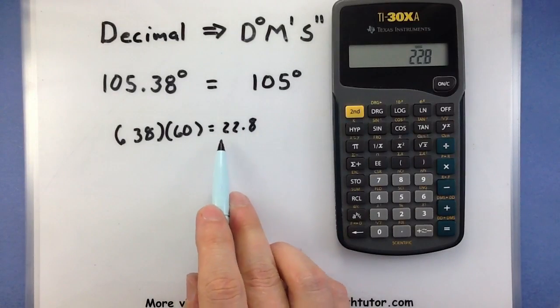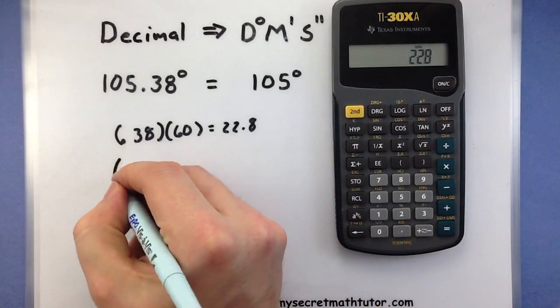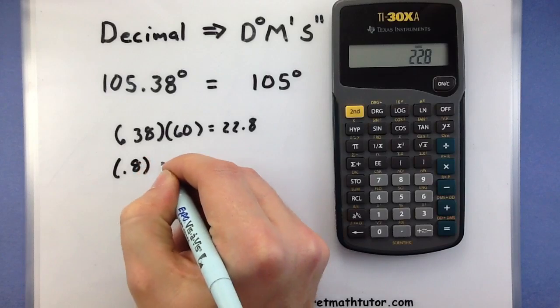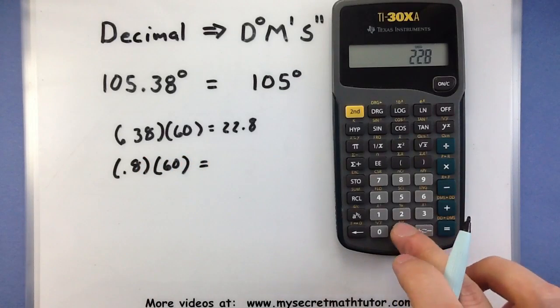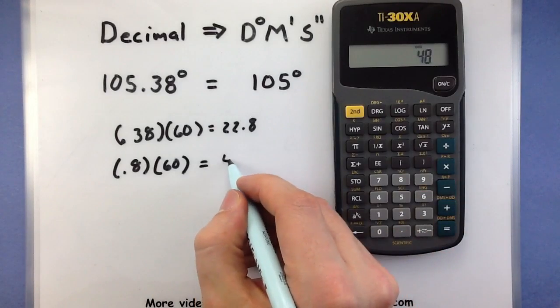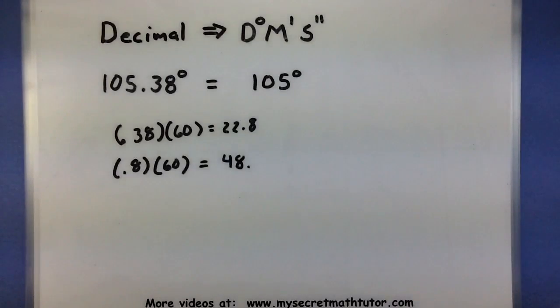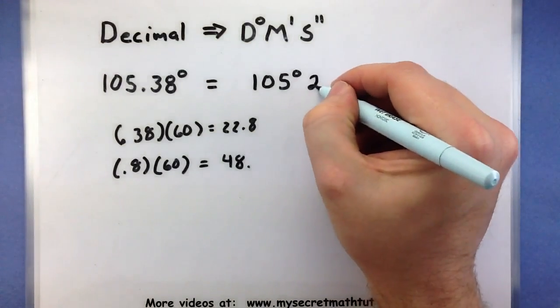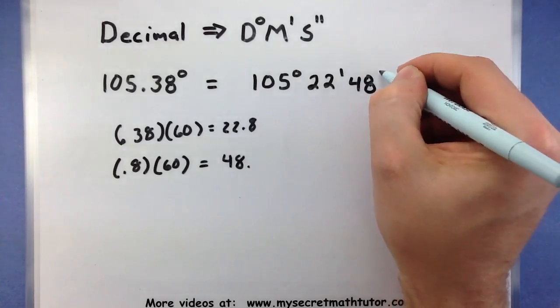Now this first number is really what I'll end up being my minutes. So let's take the leftover guy, .8, and multiply that by 60, 48.0. So I have 22 minutes and 48 seconds.